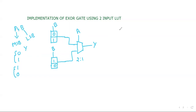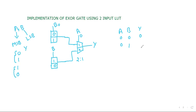Let's see how it works. When A is 0 and B is 0: A is 0 means the first cell will be selected in the top LUT. B is 0 means this first cell is selected and 0 will come to output. When A is 0 and B is 1: A remains 0, so the top LUT is still selected. B is 1 means the second line is selected and 1 will come to output.